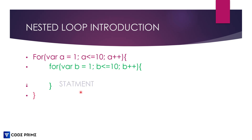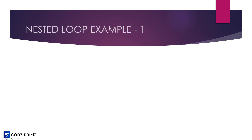Inside the inner for loop, you can run any statement — whatever you want to print or perform. That's how the nested loop works. Now let's see an example of this nested loop.